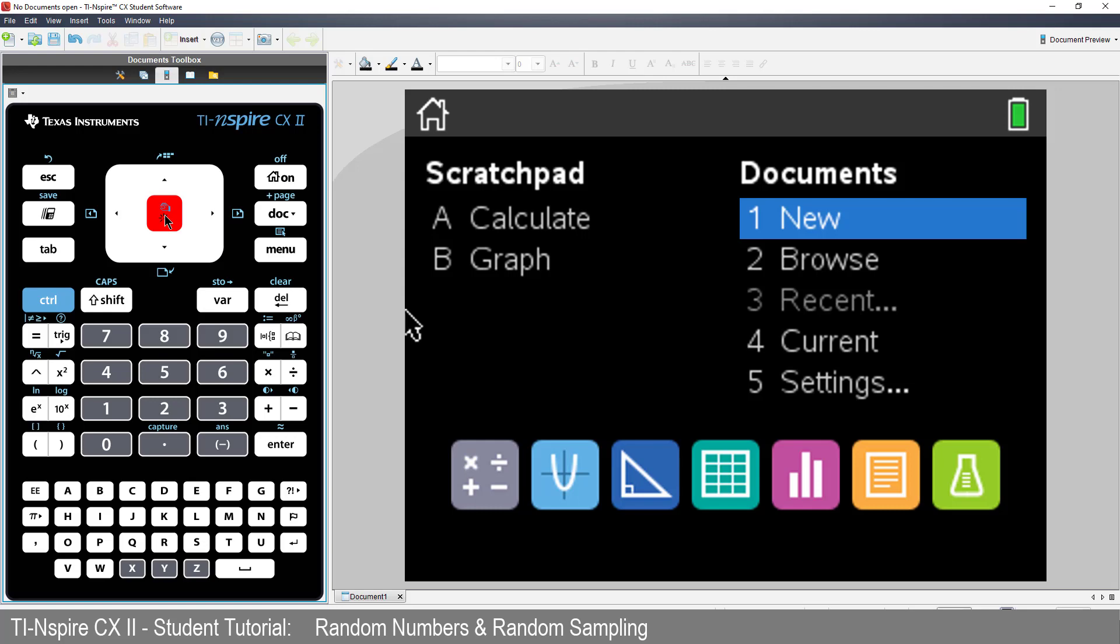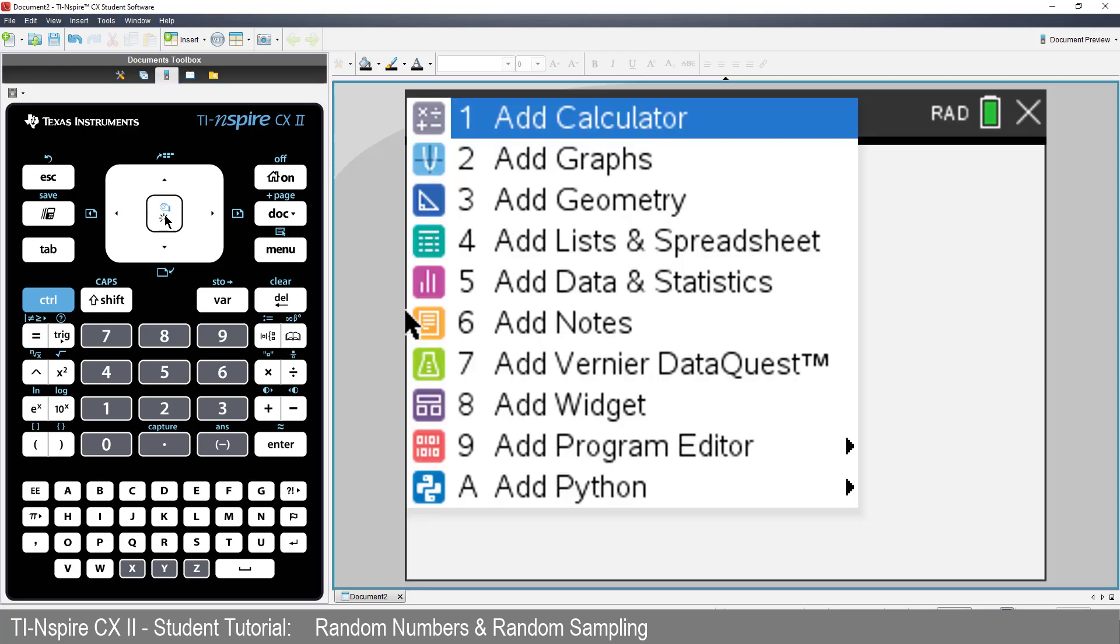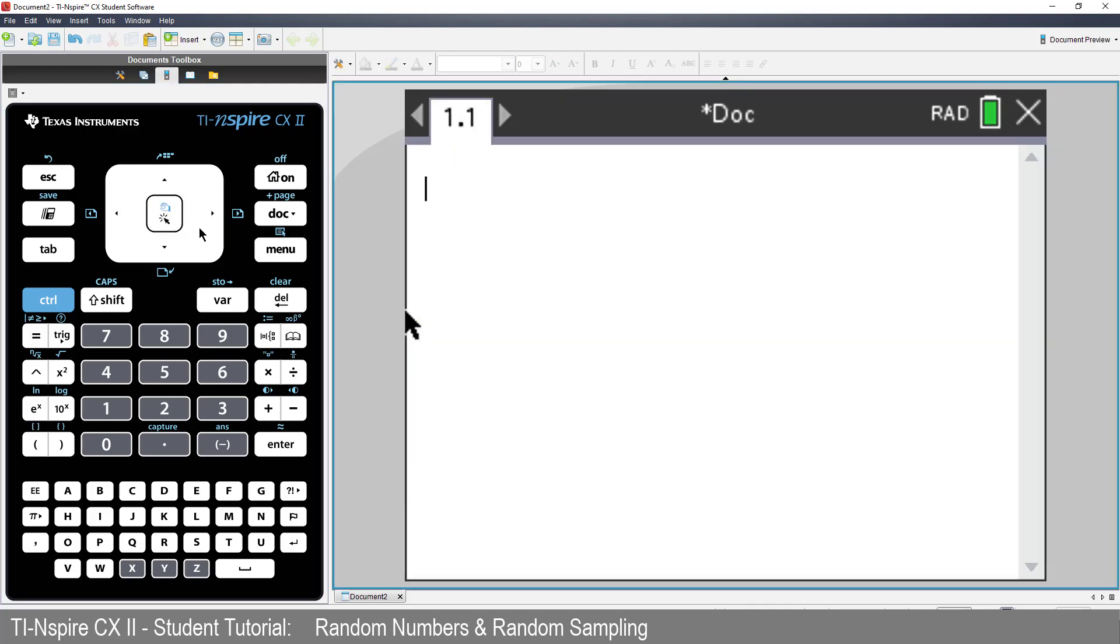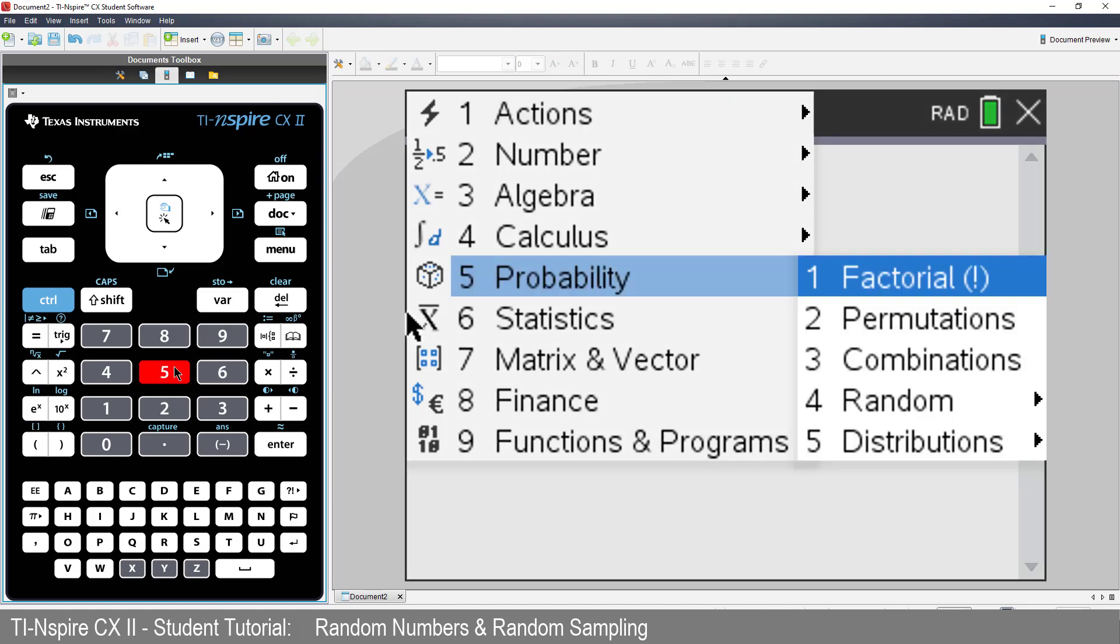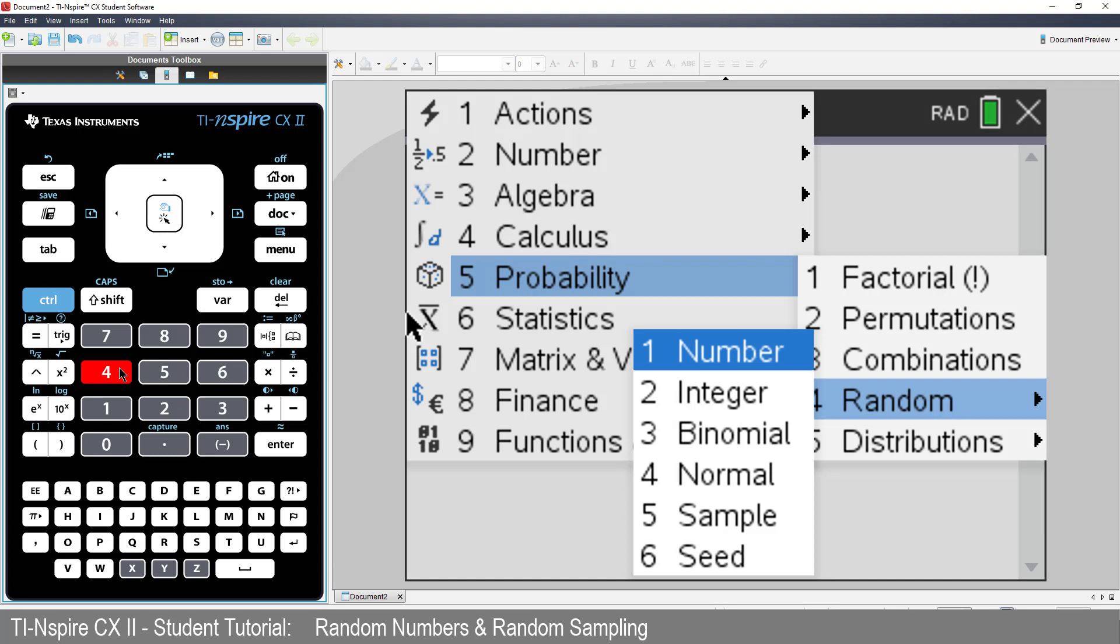Start a new document and insert a calculator application. Press the menu key, select probability, followed by random. We see that there are several options. Let's start with the first one, random number.